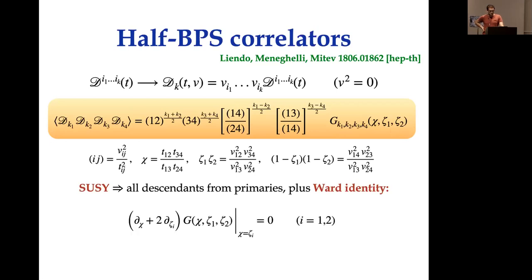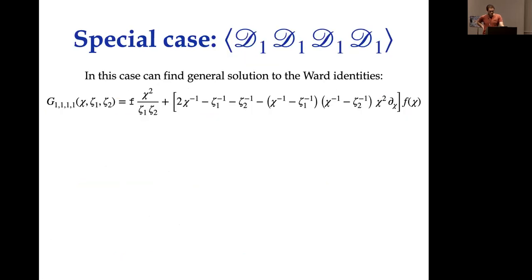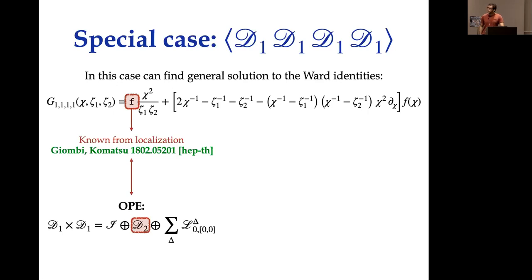Supersymmetry also forces this function g to satisfy an additional constraint known as the Ward identity. We know all relevant superconformal blocks for these correlators, so every expansion in blocks is done in superblocks, which partially solves the mixing. For the 1-1-1-1 correlator specifically, the Ward identities can be solved in terms of two quantities: a number called F, fully known from localization at every order in lambda from a paper by Giombi and Komatsu, and a dynamical function that depends only on chi and satisfies a simple crossing equation.